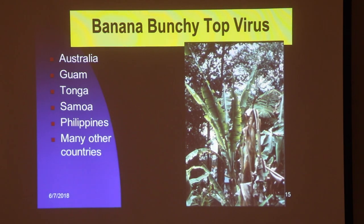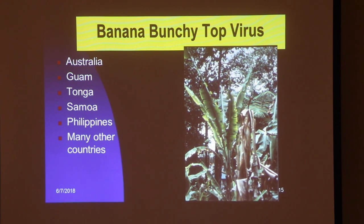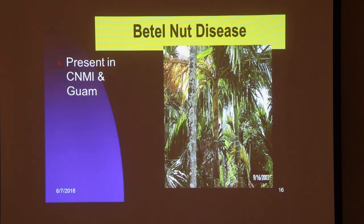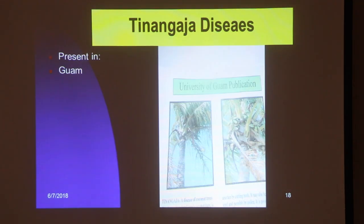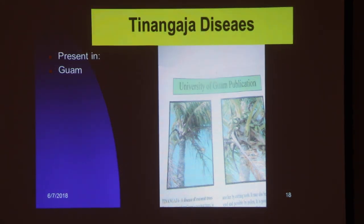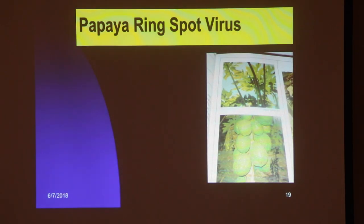There are also plant diseases not present in FSM. Banana bunchy top virus is in Guam, Tonga, the Philippines, and many other places — it stunts banana growth, producing yellowish, narrow leaves. The betel nut disease is in Guam and CNMI. Coconut kadang-kadang is present in the Philippines. Another coconut disease, tinangaja, is in Guam. Papaya ring spot virus is present in Guam, Hawaii, and India — we don't have this one.